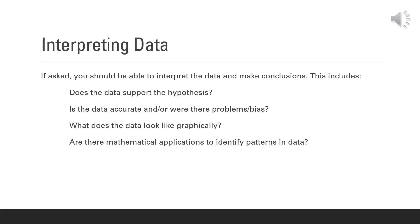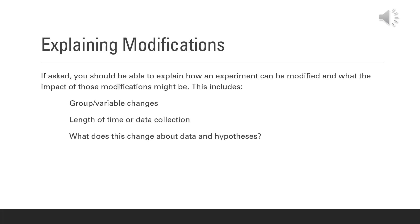You should also be able to interpret data, either data given to you in the question or hypothetical data you are asked to generate. You should be able to explain whether the data supports your hypothesis, whether it is accurate, or whether there might have been problems or bias. You may be asked to graph data or apply mathematical analysis to identify patterns. Additionally, you should be able to describe how an experiment can be modified — through group or variable changes or changes in time and data collection — and identify how those changes impact your data and hypothesis.